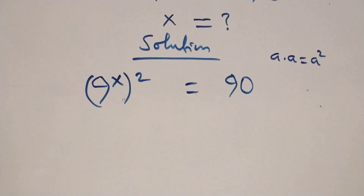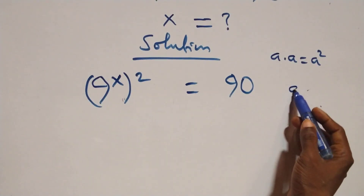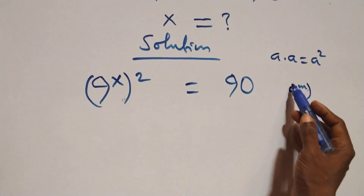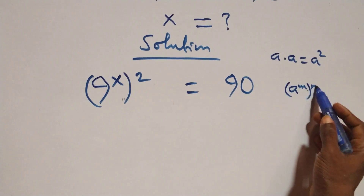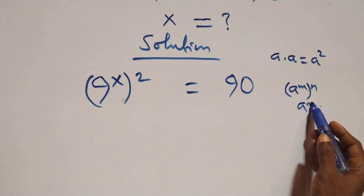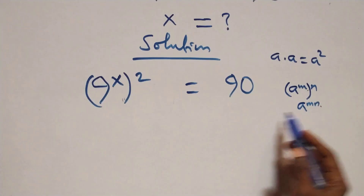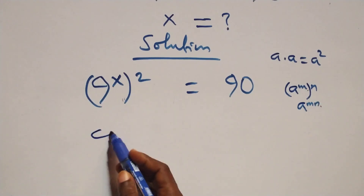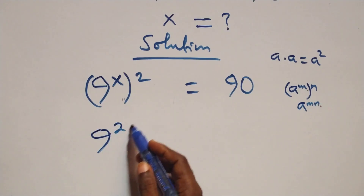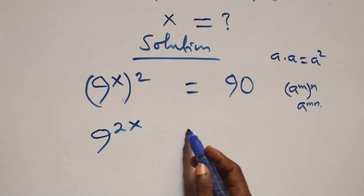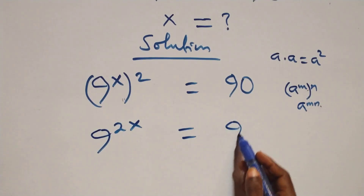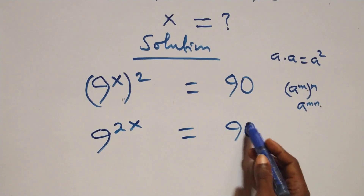The next step follows: when we have a raised to power n, raised to power n, this is the same thing as a raised to power m×n. So the powers multiply, and we have 9 raised to power 2x equals 90.